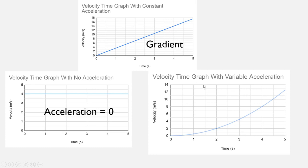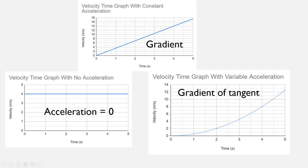The most complicated case is where we have variable acceleration. We can't find one number that describes the acceleration of the whole journey, because the acceleration at different points is very different. The line is very shallow and not steep at all at the start, whereas it becomes very steep towards the end. So at that point it's accelerating a lot more than earlier on, and you can only find the acceleration at specific points by finding the gradient of a tangent.